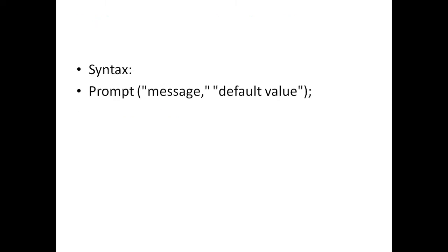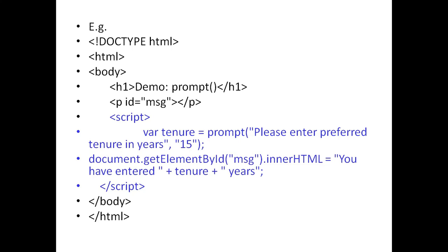The general syntax is: prompt('message', defaultValue). For example, here inside the script tag, prompt is used with 'Please enter preferred tenure in years' and the default value is 15. When we execute this script and click OK, it will display the message: 'This is the first script, you have entered 15 years'.